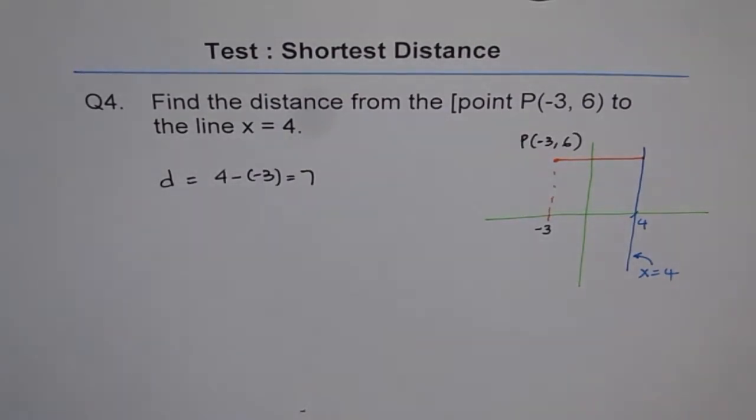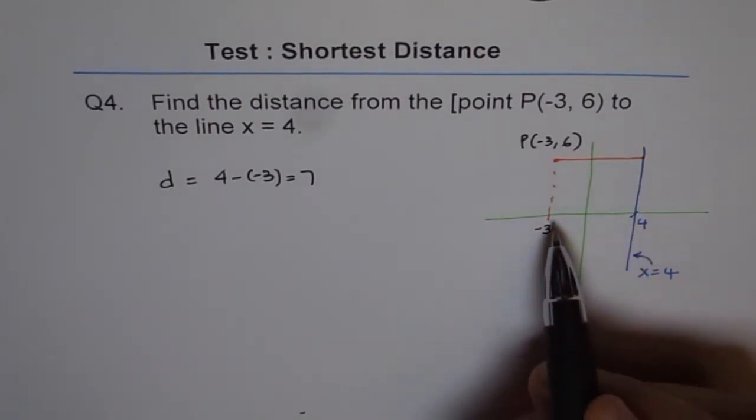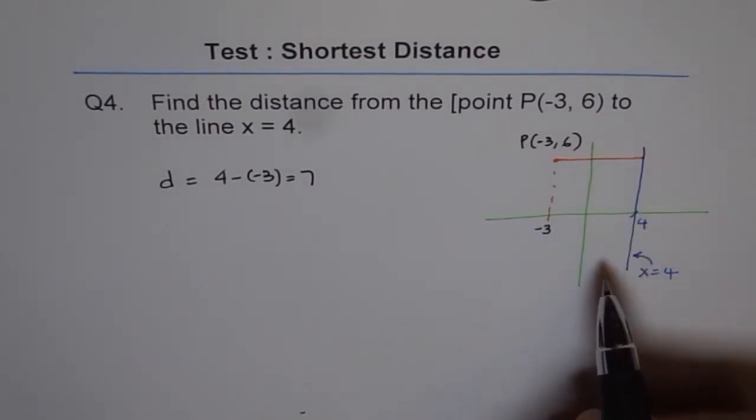So when you are doing shortest distance between vertical lines and horizontal lines, in that case, you really have a line there. You don't really have a triangle there. And therefore, it's very easy. It's the difference in the values of x if the line is x equals 4.